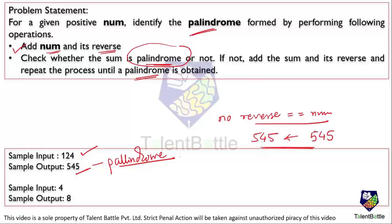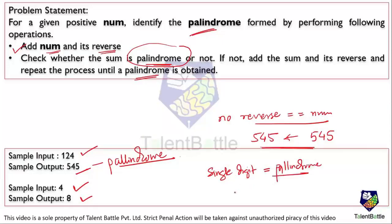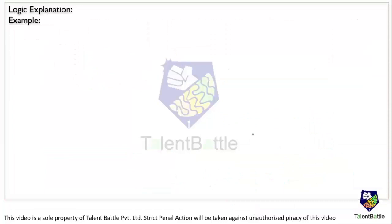If the sample input is the single digit 4, the output is 8. A single digit number is always a palindrome number. But while performing this operation, you still have to add it once, because the reverse of a single digit is the same number. So 4 plus 4 gives 8, which is the output. After performing this process you will get the palindrome number.